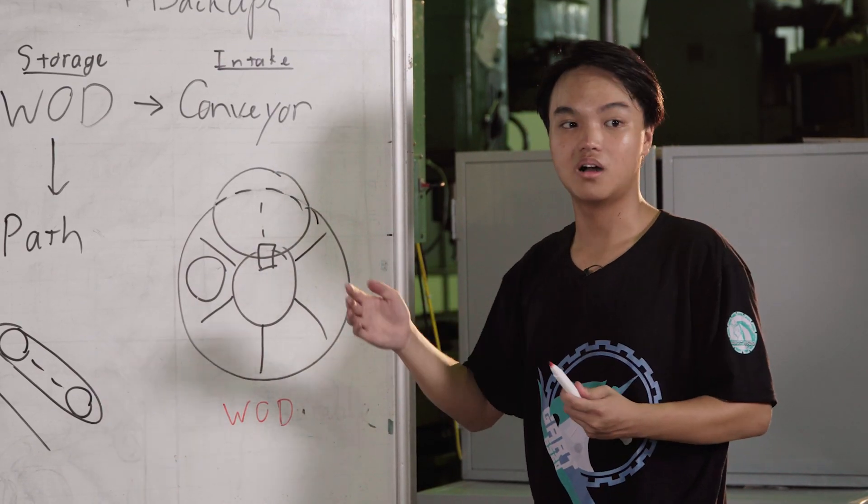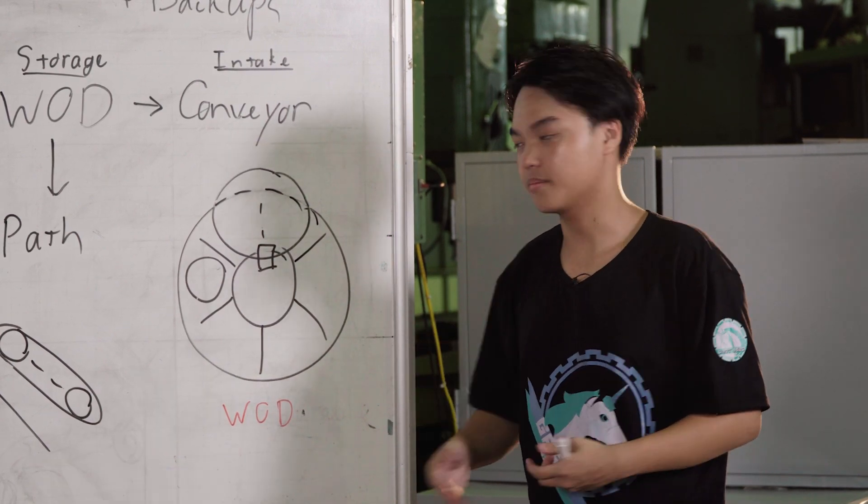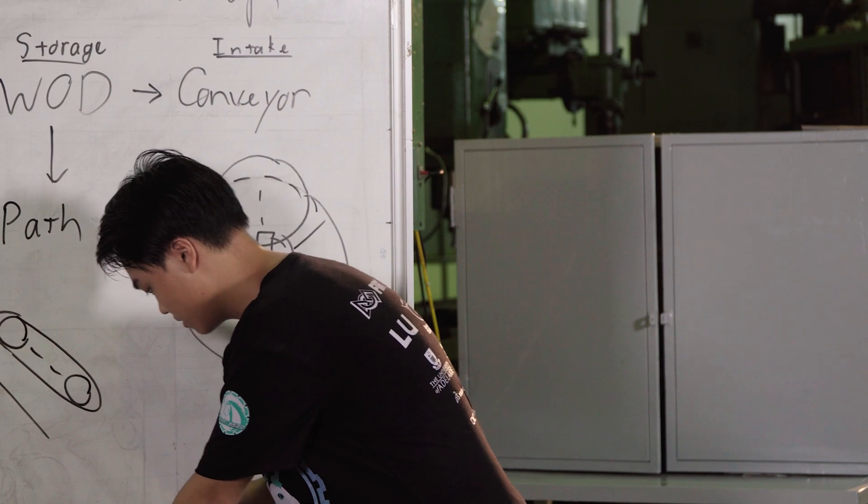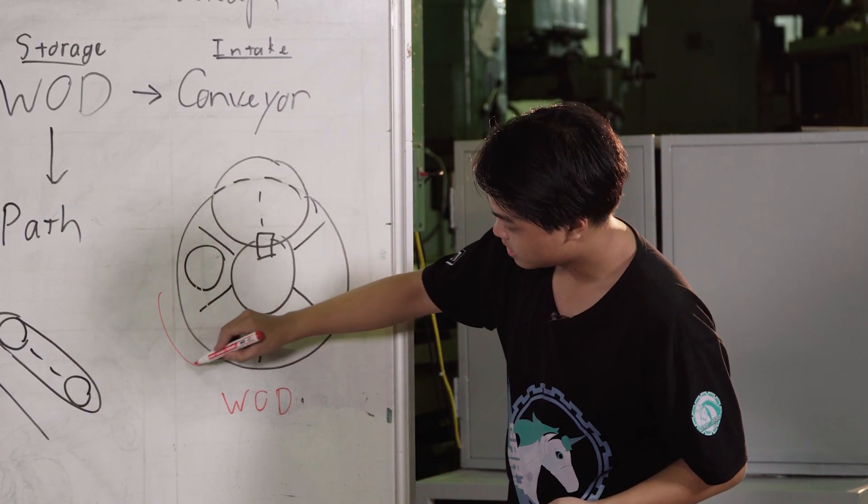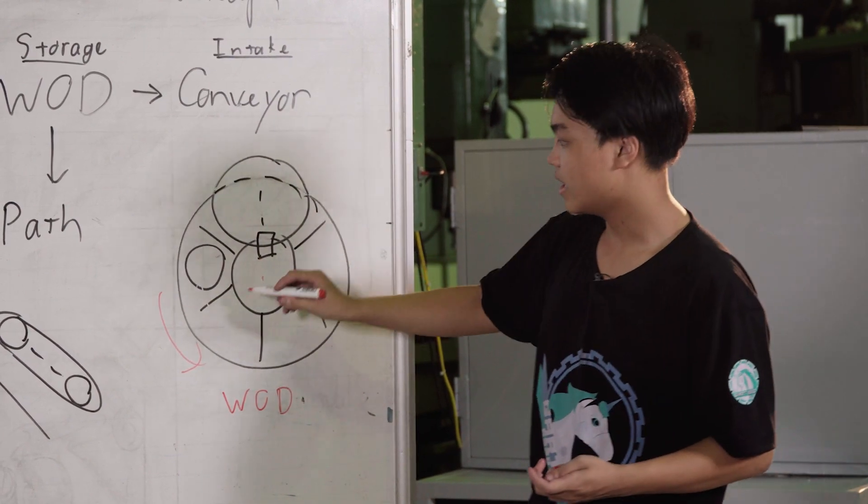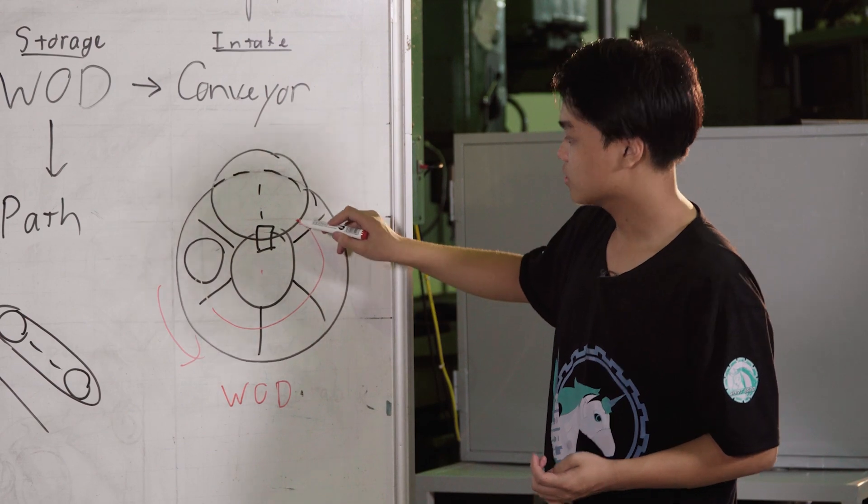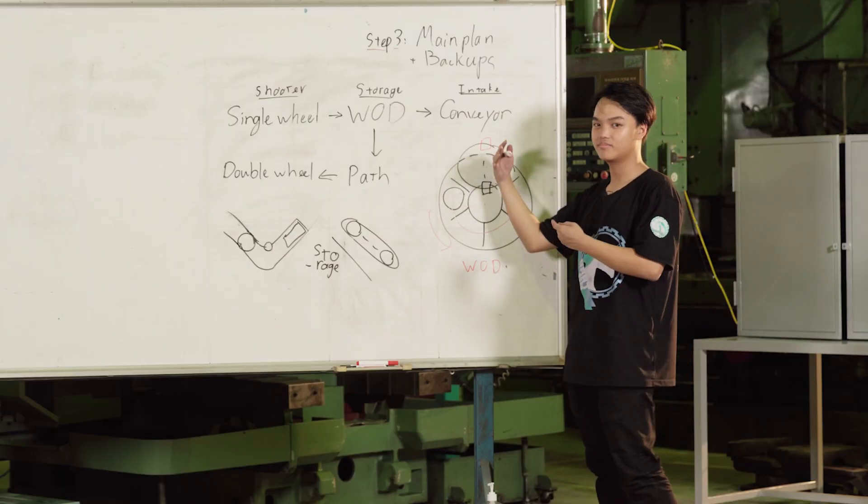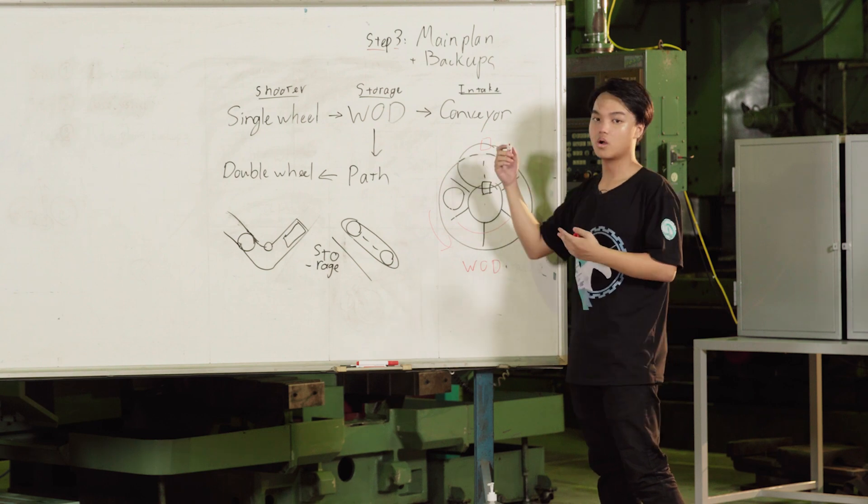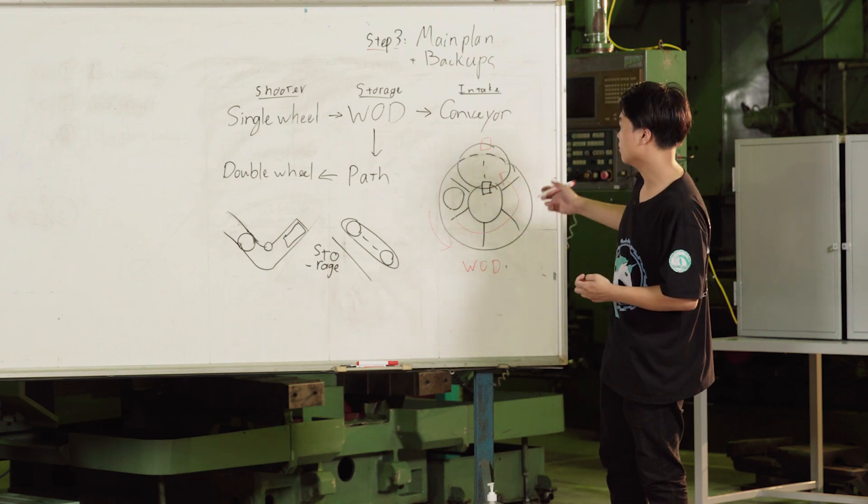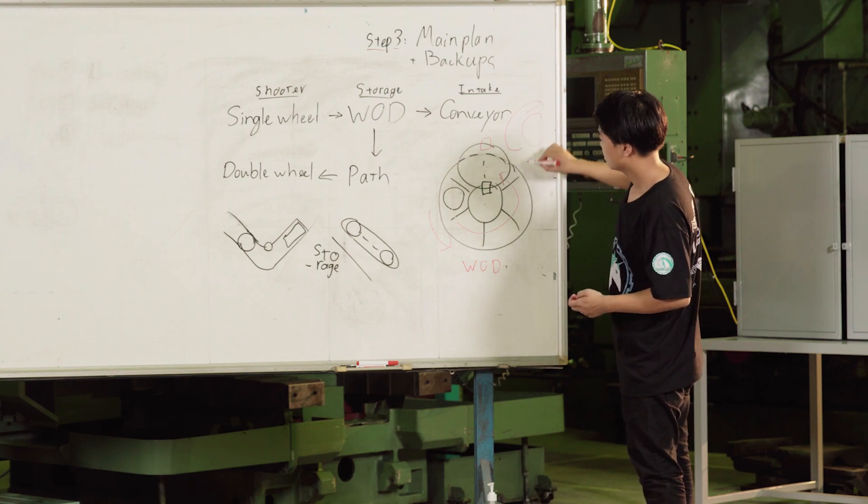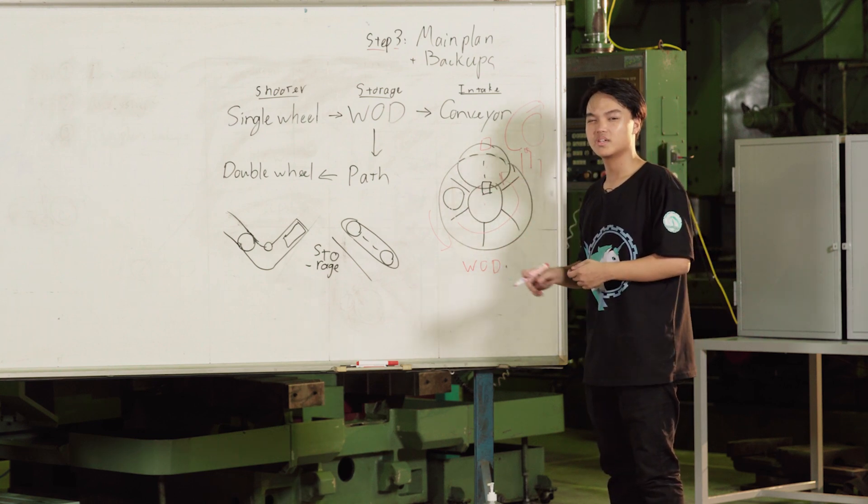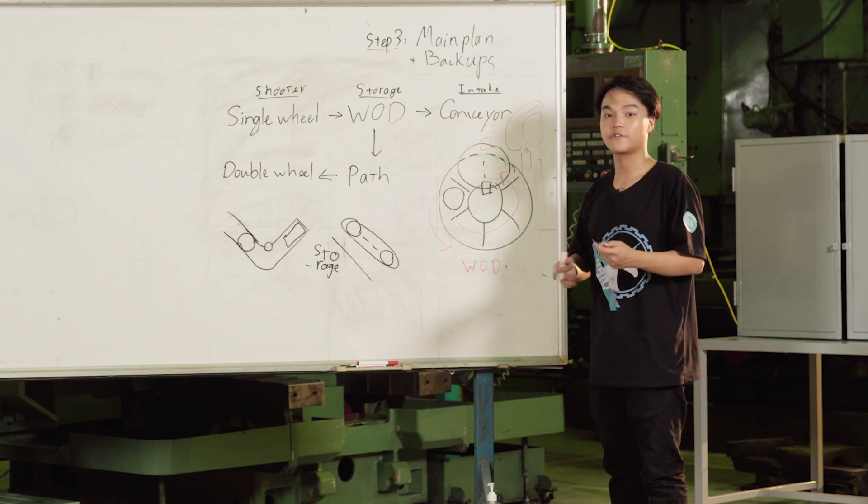What is the wheel of doom? It may sound cool, but it's simply a storage system. It will alternate in size from different FRC games. The wheel of doom will rotate around the center of the storage and basically bring the balls around. When it comes in contact with a pickup mechanism, it will go up and out. This works well with the single wheel because the single wheel shooter can be loaded from the bottom up. This wheel of doom is proven to be very efficient and very reliable. But the downside is it's very hard and very complex to design. Only experienced teams can design and manufacture one.